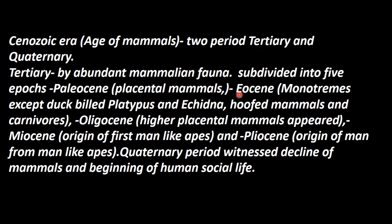Then comes the Eocene period. In the Eocene period, there are a large number of monotremes. These are called monotremes — except for the duck-billed platypus and echidna, most monotremes have disappeared.